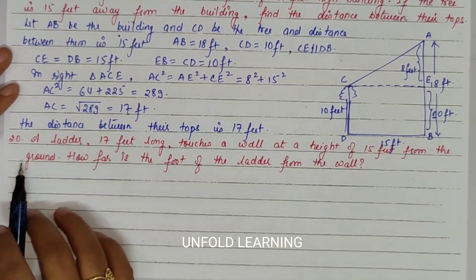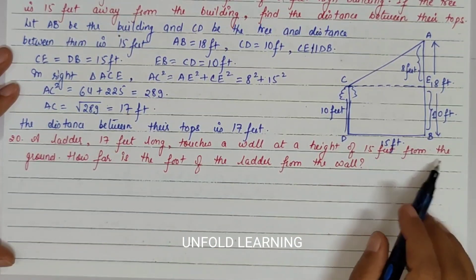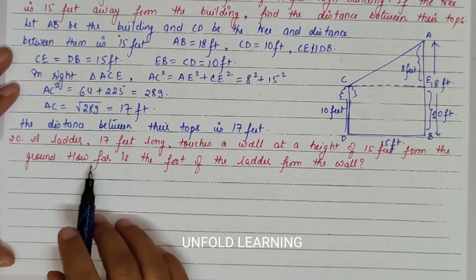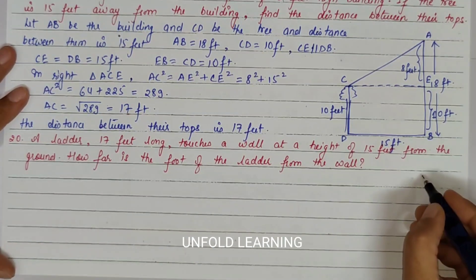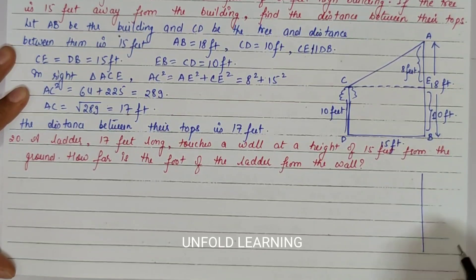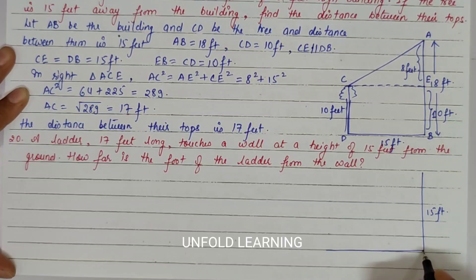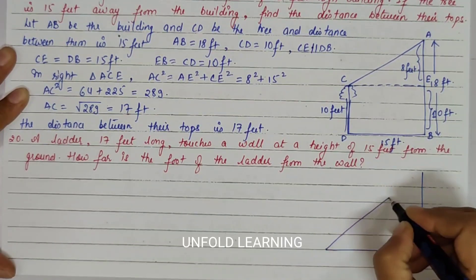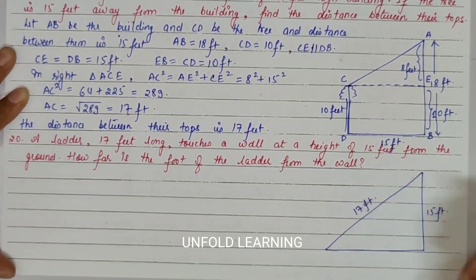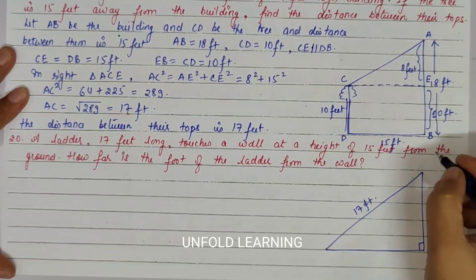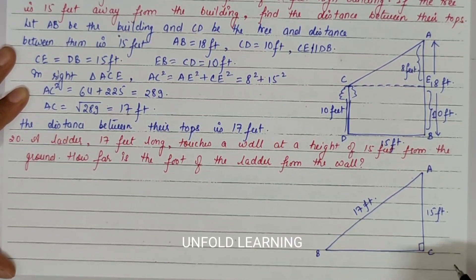Question Number 20. A ladder 17 feet long touches a wall at a height of 15 feet from the ground. How far is the foot of the ladder from the wall? We have a wall which is 15 feet high, this is the ground, and a ladder is fixed between this wall which is 17 feet. This angle is 90 degrees. Marking the points as A, B, and C.